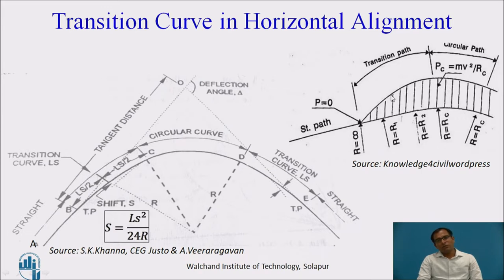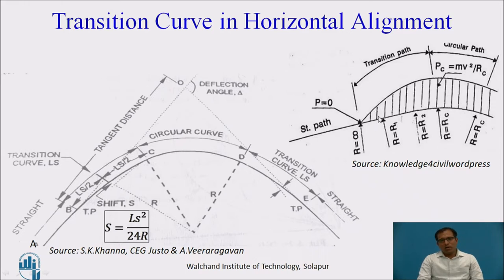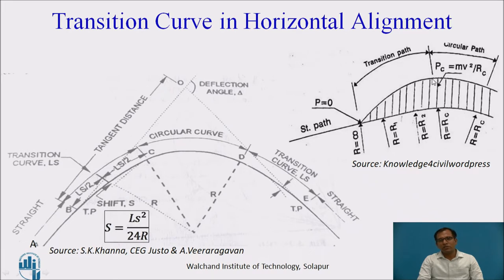The centrifugal force is increasing from the transition point. If you do not have any transition curve in between — if the circular curve is joined directly to the straight path — the centrifugal force applies a sudden jerk and lateral sway on the vehicle. This causes discomfort to passengers sitting inside, and smooth steering of the vehicle will not be possible safely. That is the main hazard that will happen without any transition curve.